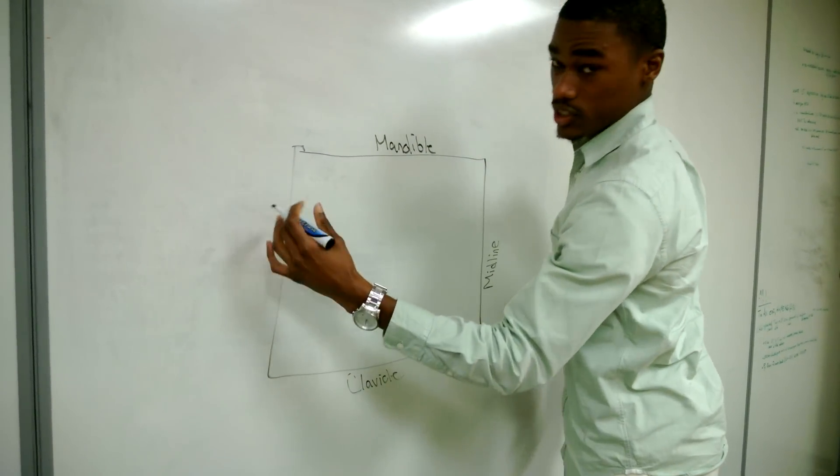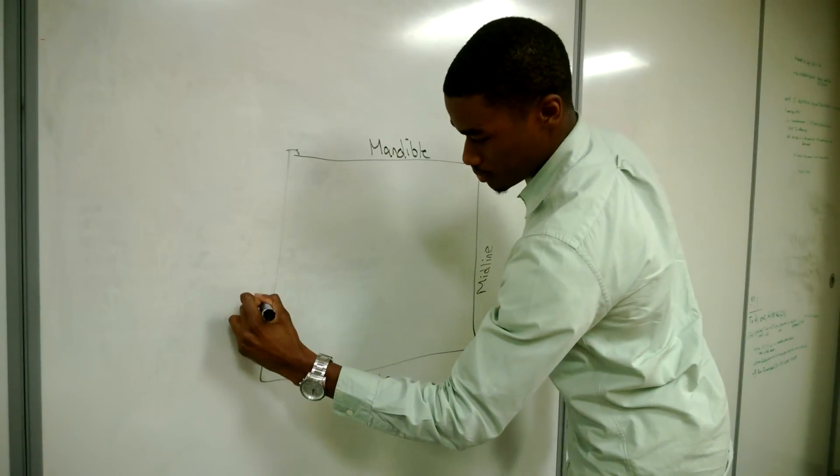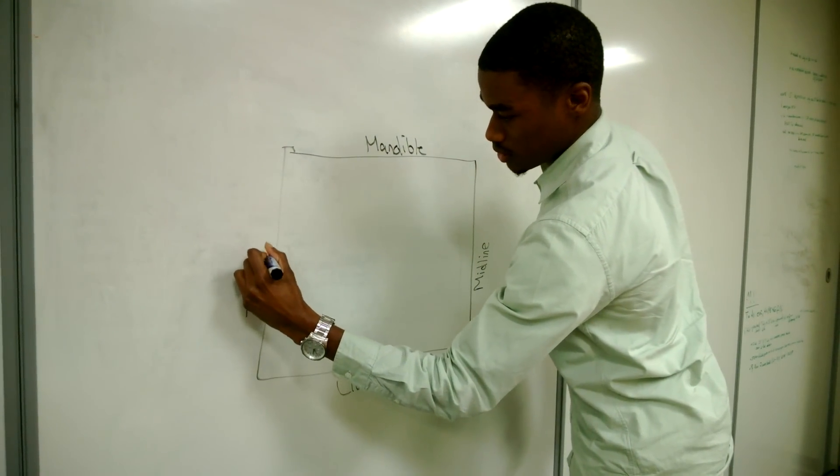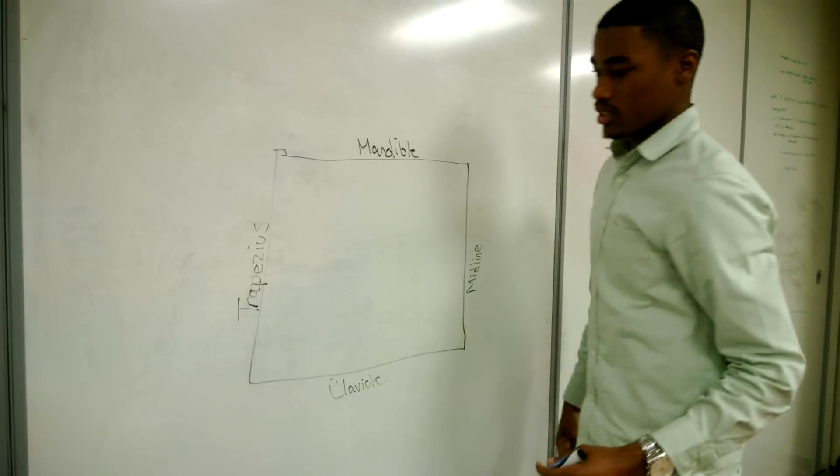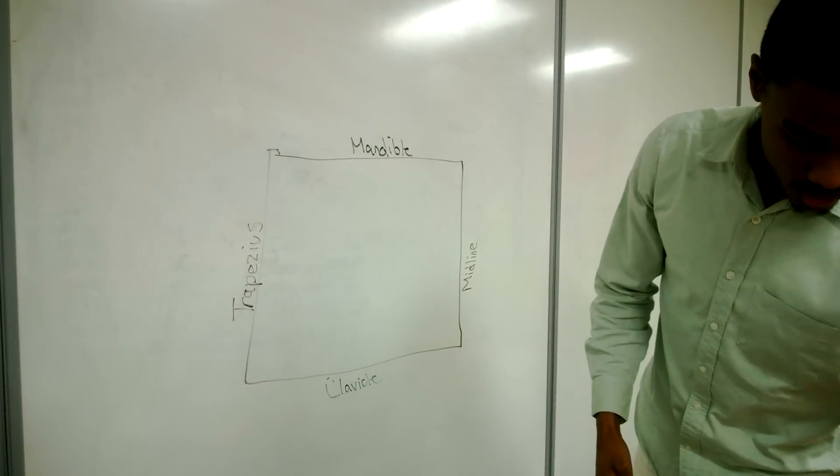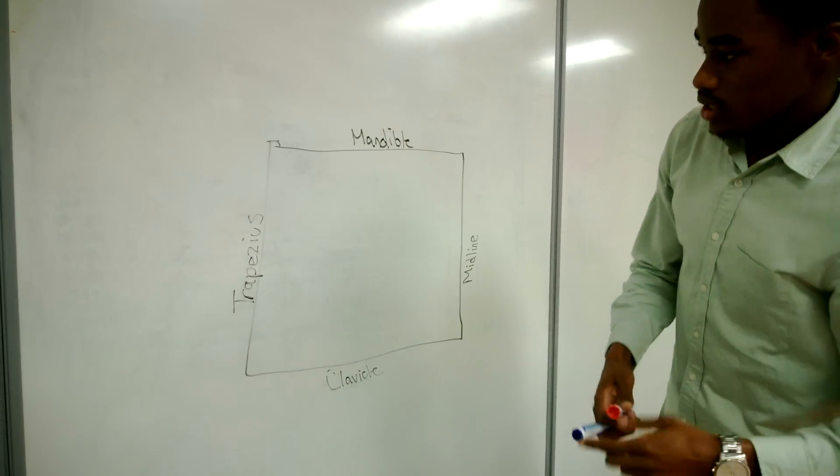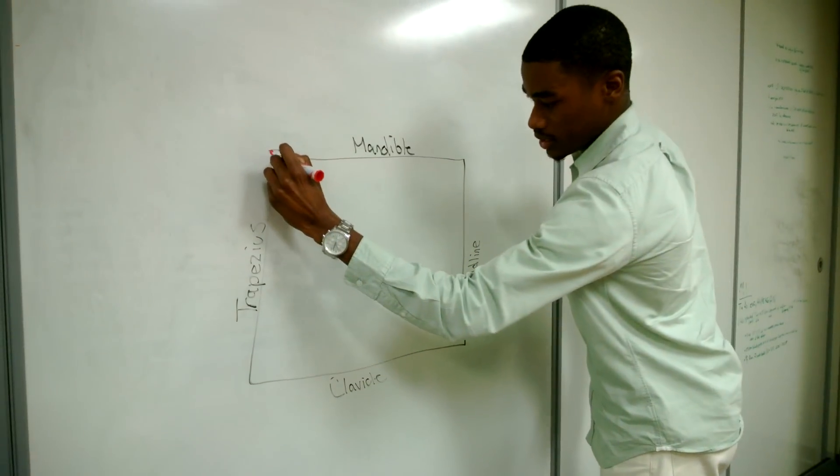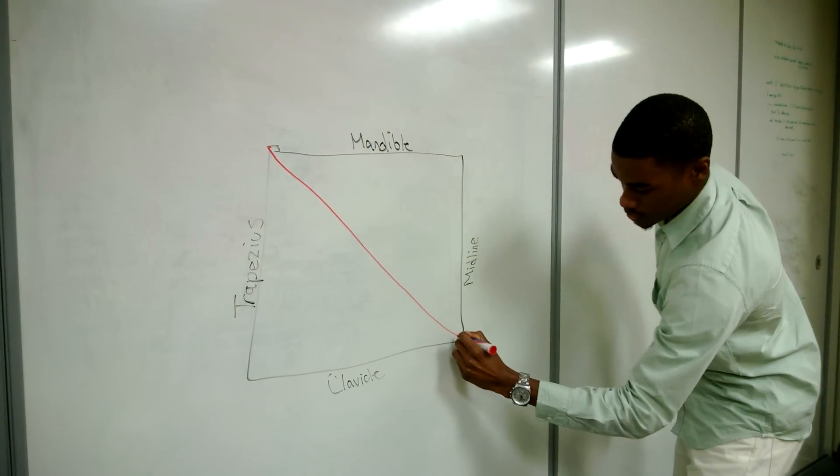On the side you're going to have, or sorry, posterior you're going to have your trapezius. Okay, so you start off first, which I'm going to draw over in. Start off by drawing one line down across the box.